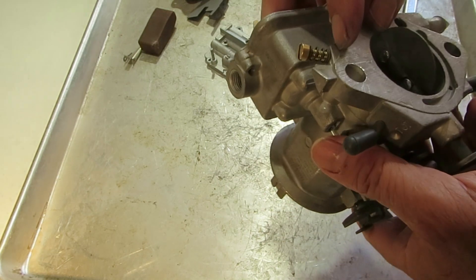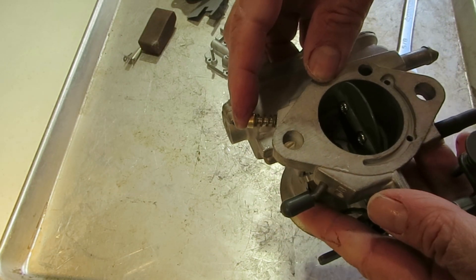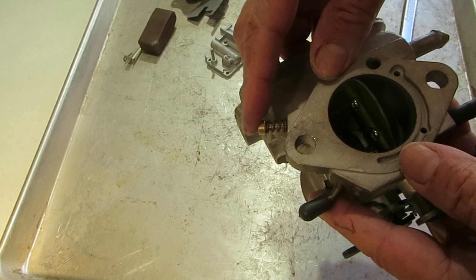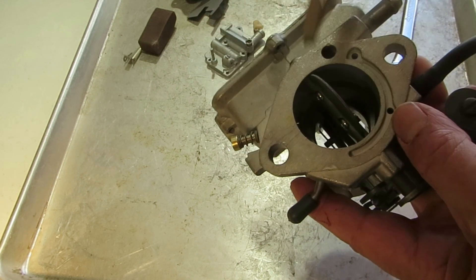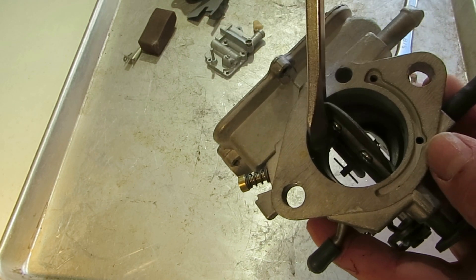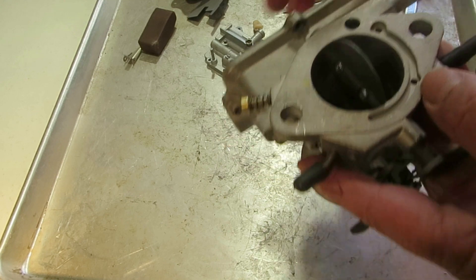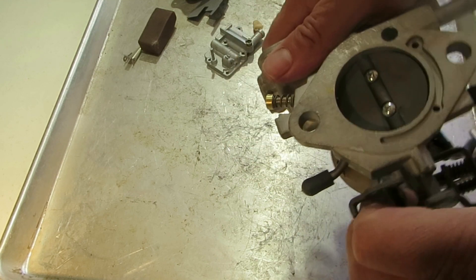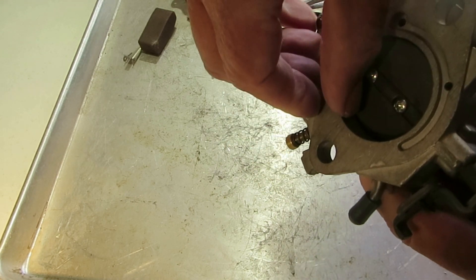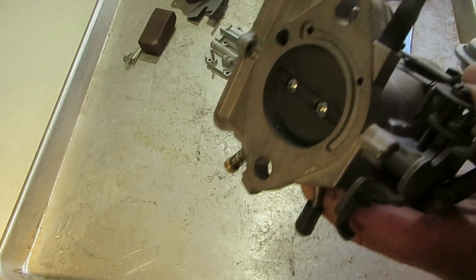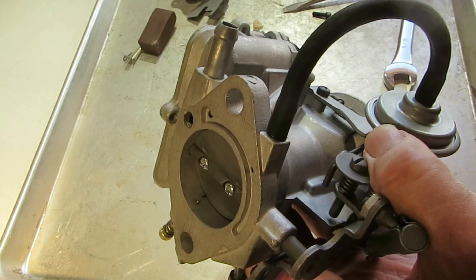And it comes down to here, that's your idle screw—idle, excuse me, idle mixer screw—and your discharge is right here, idle discharge right here. Okay, now this is idle, you see the discharge is below the valve.